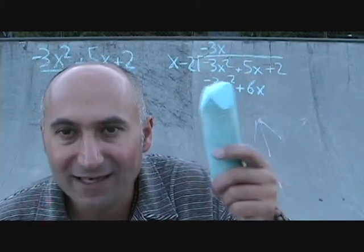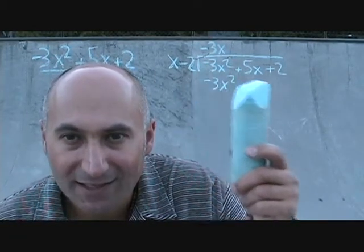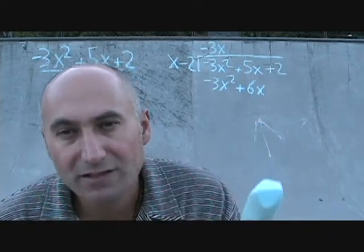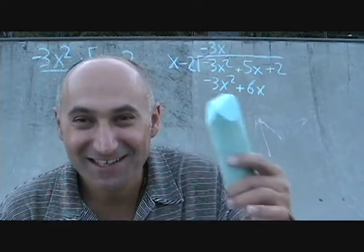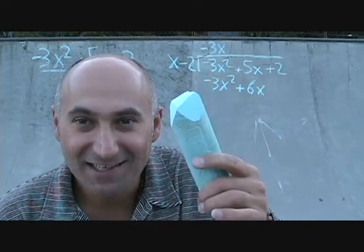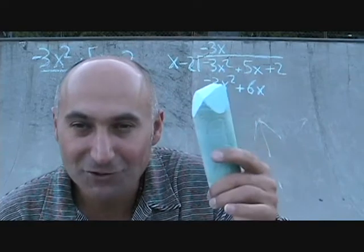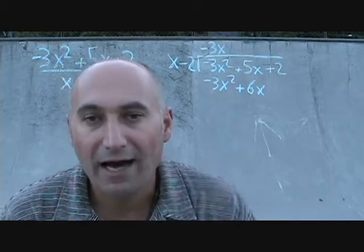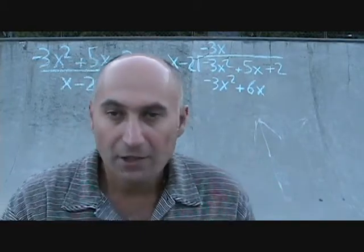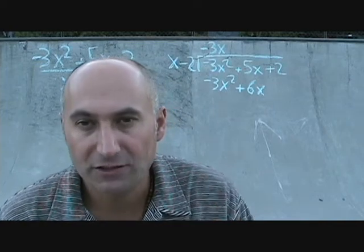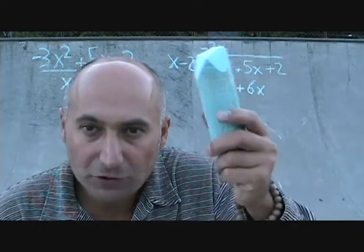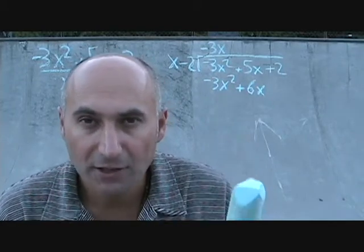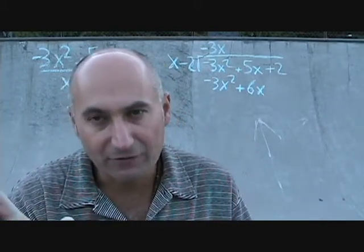Now you're going to subtract this from the term above. The way it's usually taught, you go minus this and minus that from those two terms — a negative and a negative equals a positive, so they cancel. I don't like that because I lose track of my signs. The way I prefer doing long division: as soon as you finish your multiplication, change the signs. Trust me, this makes life a lot easier.